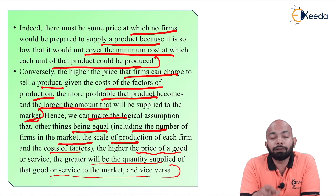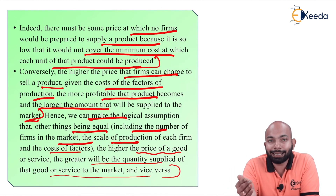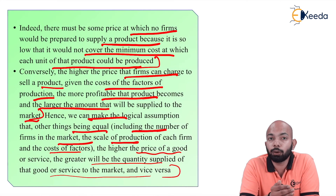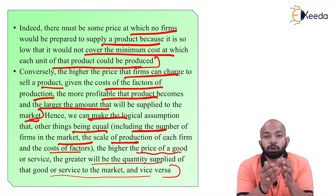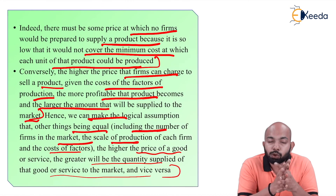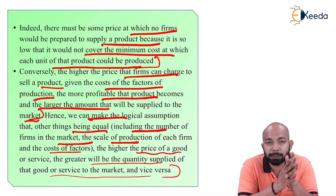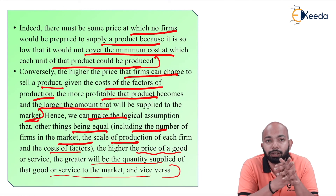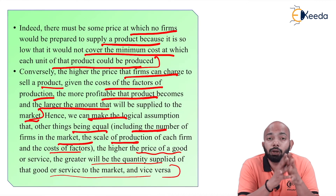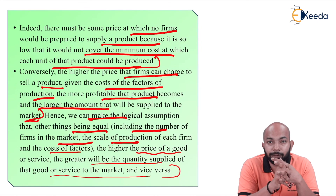Whenever other things are constant and only price is moving, if the price is increasing the quantity supplied will be more. This is the essence of the positive slope of the supply curve — it represents a direct relationship. This is all that you need to understand about the reason for the positive slope of the supply curve.